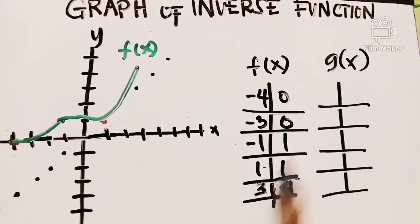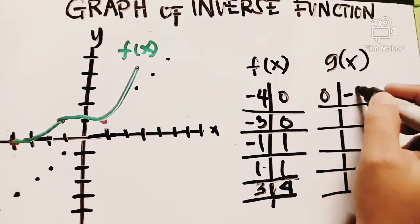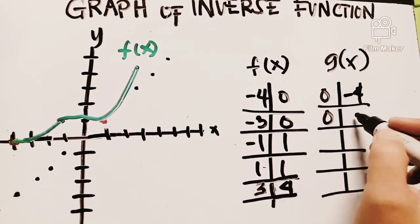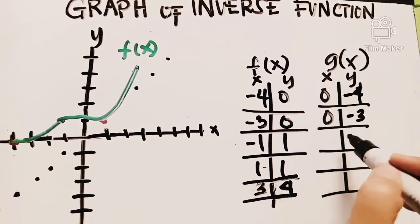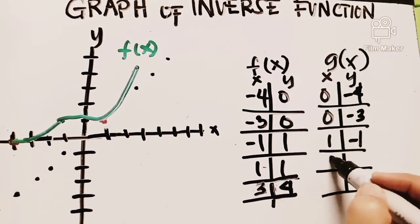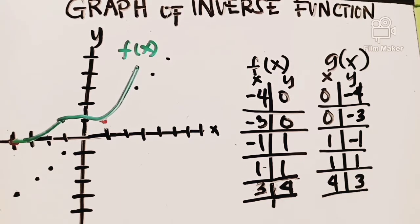Now for g(x) — take note, g(x) represents the inverse. We interchange the numbers. So: 0 and negative 4. Then 0 and negative 3. Then 1 and negative 1. Then 1 and 1. Then 4 and 3. Let us see what it looks like. We have 0 and negative 4 — here. Then 0 and negative 3 — here.